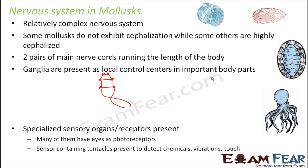Ganglia are present as local control centers in important body parts. Ganglia are present in the oral region, that is the buccal region. There are also cerebral ganglia present in the brain region, and pedal ganglia present towards the feet region. The cerebral ganglia are present above the esophagus, and the pedal ganglia are present below the esophagus. These ganglia present in important points of the body control those specific points, just like segmental ganglia used to control the movements of a particular segment. That is why they are known as local control centers.